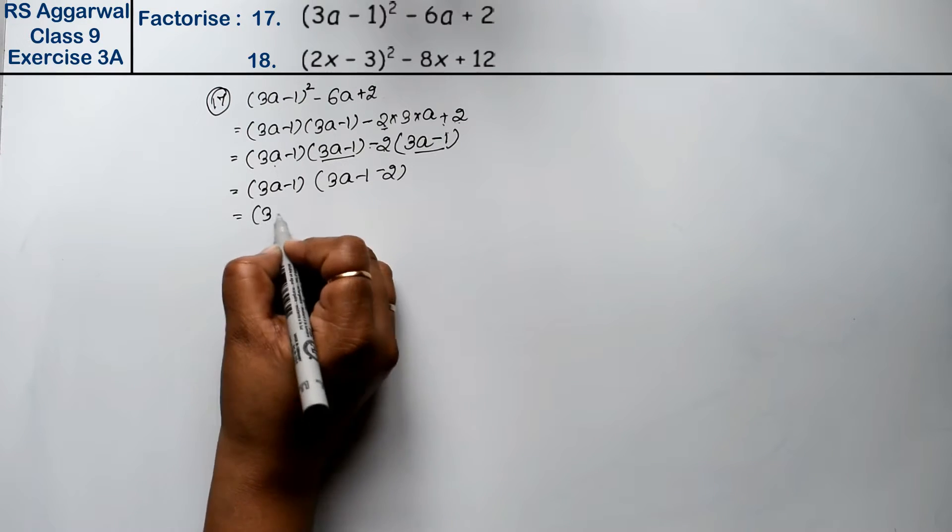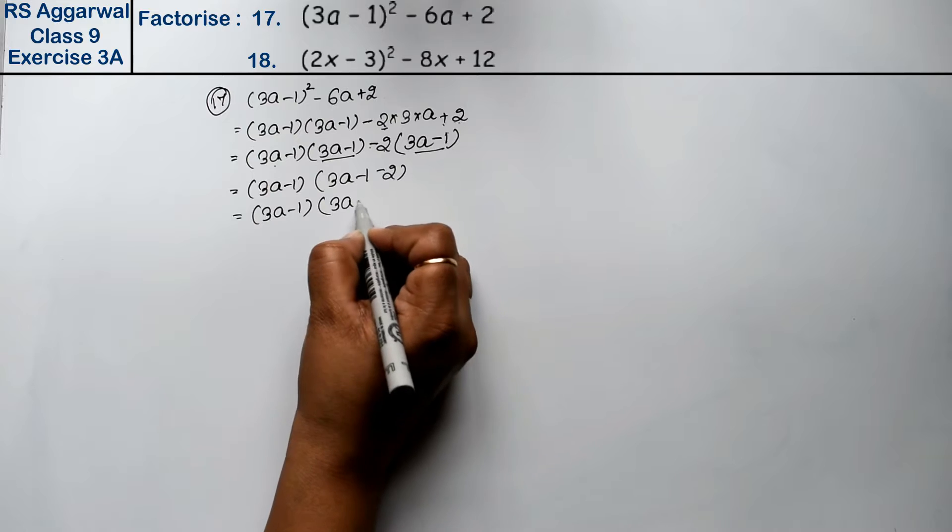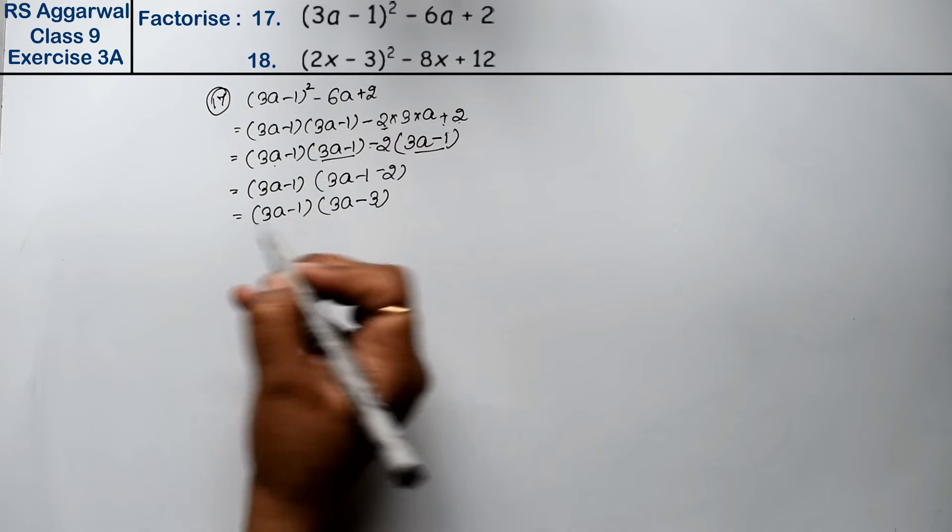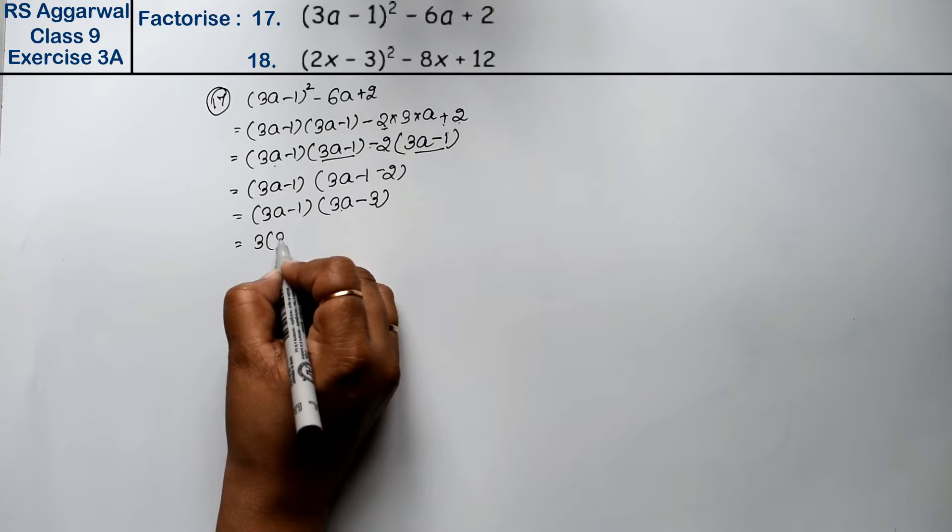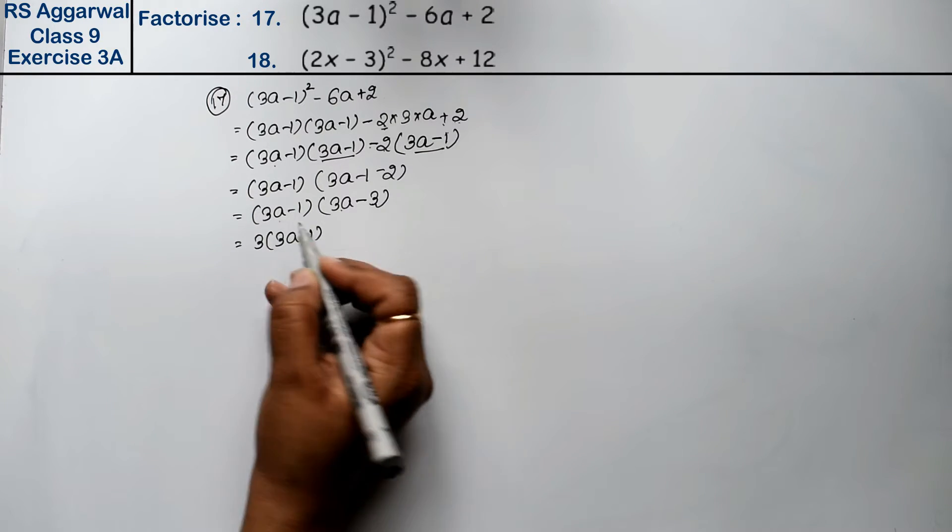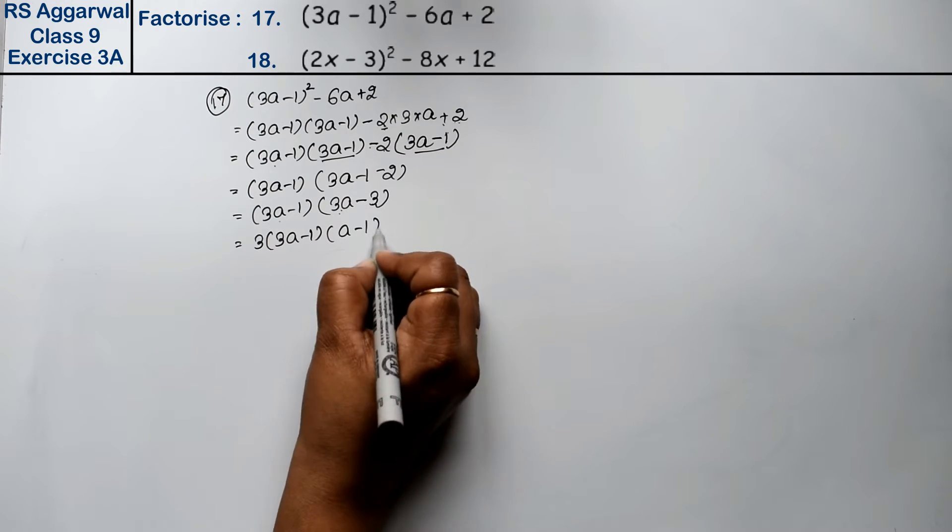So what remains is (3a - 1) and this becomes 3a minus. Both minus add together to make 3. From both of these, 3 is coming out common, so we take 3 outside: (3a - 1). From both of these, taking 3 common gives us (a - 1) as the answer.